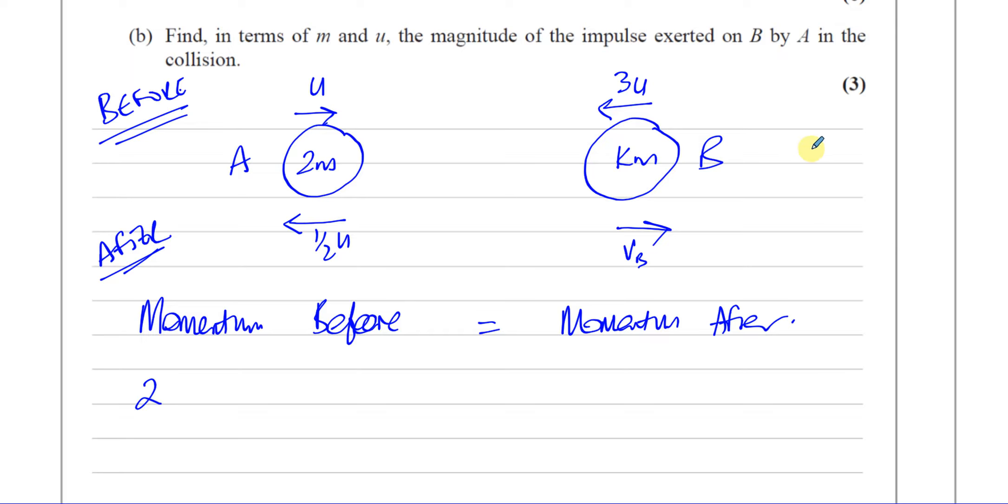Now I'm going to take this direction as positive. So 2M times U plus KM. Now be very careful, this is going in the opposite direction to what we call positive. So this is velocity, not speed here that we're using. This is minus 3U.